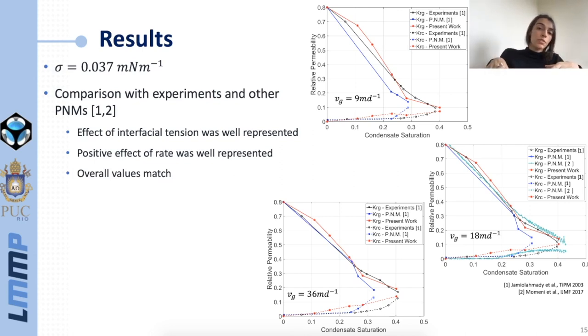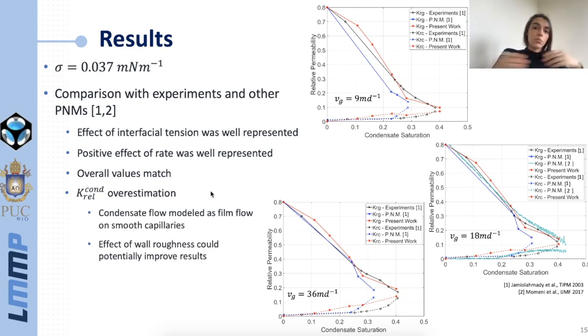For this set of results specifically I believe that our model has outperformed the other models. We can see that this model in blue doesn't represent very well the experiments at high condensate saturations and this model in green, even though it represents very well this case here, they didn't try to reproduce the other cases so we don't know if those effects are well represented. Finally we can see both in this set of results and the other one that we have overestimated a bit the condensate relative permeabilities. I believe that this happened because we modeled condensate flow as a liquid film flow on smooth capillaries and this is not very realistic. So probably by including in the model the effect of wall roughness could potentially improve those results.